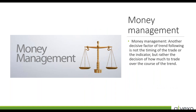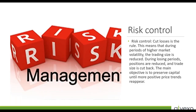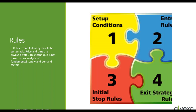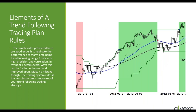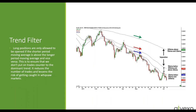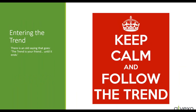Another decisive factor in trend following is not the timing of the trade or the indicator, but rather the decision on how much to trade over the course of the trend. During trend following you could say: I see this push, this ease, this push, this ease starting to be well-defined — I'm going to enter a trade here, and if it continues up to another push and ease, I'm going to enter an additional trade. This is part of your rules. Trend following should be systematic — price and time are always pivotal. This technique is not based on analysis of fundamental supply and demand factors.